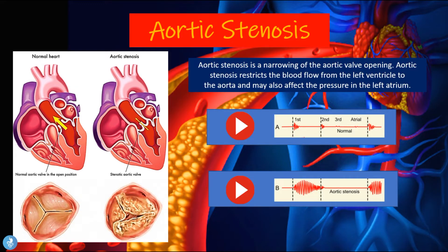Aortic stenosis is the narrowing of the aortic valve opening. It restricts the blood flow from the left ventricle, the most important chamber of the heart because it supplies oxygen-rich blood to the rest of the body cells. When we have aortic stenosis, there is a restriction of blood flow from the left ventricle into the aorta, which may also affect the pressure of the left atrium.